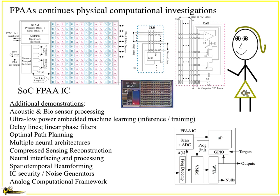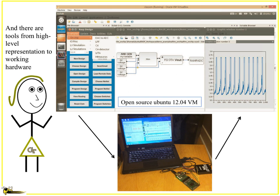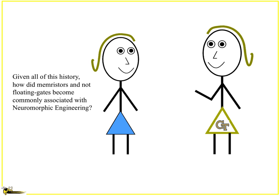It opened up a whole bunch more things, particularly machine learning, but in a whole bunch of elements that are listed, and there's a whole bunch more actually. And they're tools, and that would be a whole other topic. It's an amazing thing that you can actually sit down and have students use this. So like, given all this history, how did memristors and not floating gates become commonly associated with neuromorphic engineering? It seems like a fair question.